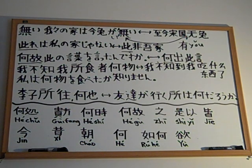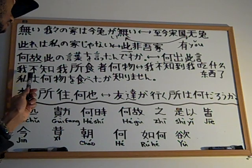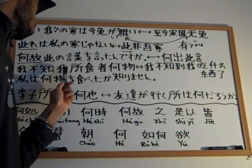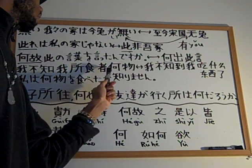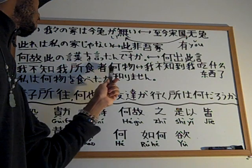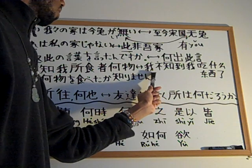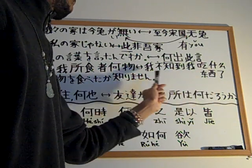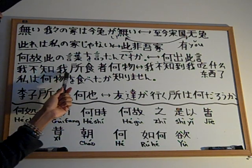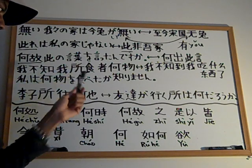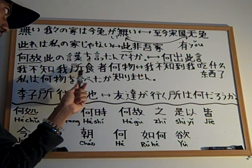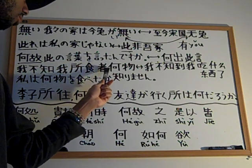Okay, the next example is a classical Chinese verse. The modern Chinese equivalent is something like 'I don't know what I ate.' In the classical Chinese, there's a character here that functions as a nominalizer and object marker. 食 (shí) means 'to eat,' and 食者 (shí zhě) — the 者 here marks the object or nominalizes the verb.